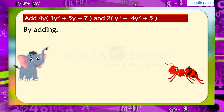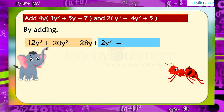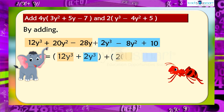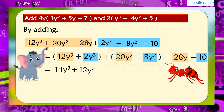Then by adding 12y cubed plus 20y squared minus 28y, plus 2y cubed minus 8y squared plus 10, and adding the like terms, we get 12y cubed plus 2y cubed, plus 20y squared minus 8y squared, minus 28y plus 10, equals 14y cubed plus 12y squared minus 28y plus 10.